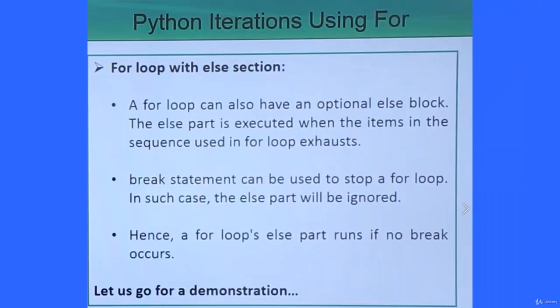For loop with the else section. A for loop can also have an optional else block. The else part is executed when the items in the sequence used in for loop exhausts. When the sequence will get exhausted, then the else part will get over the control. Break statement can be used to stop a for loop. In such case, the else part will be ignored on the other hand. Hence a for loop's else part runs if no break occurs. If there is a break, then the else part will not be executed. Otherwise, the else part will be executed. When the else part will be executed, when the sequence will get exhausted.